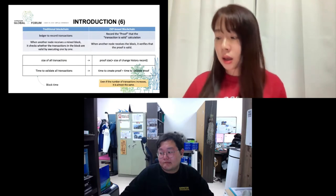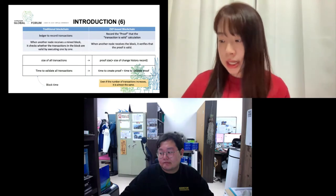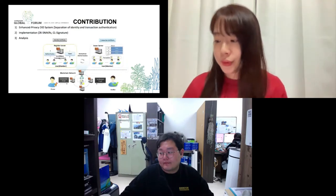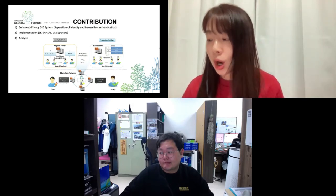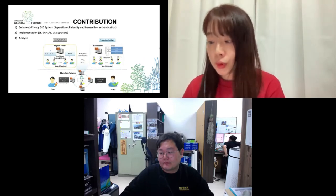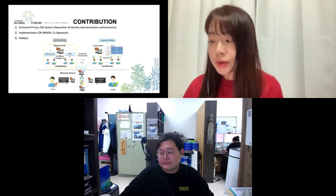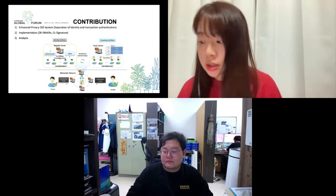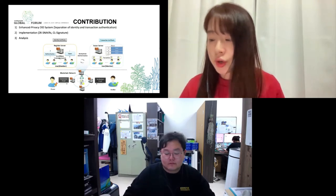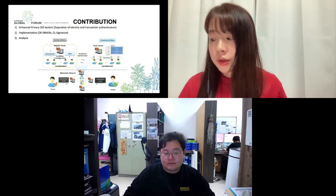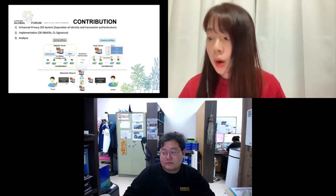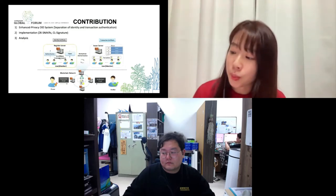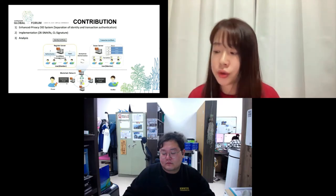Existing transaction records are converted to proof. The size is reduced and the verification time is reduced, too. Our contribution is as follows. First, we propose a DID system with enhanced privacy, like the Hyperledger INDY project, suppressing member identity verification and securing transaction certificate connections. Second, we implement representative zero-knowledge proofs: CL signature and ZK-SNARKs. Because the traditional INDY project considers only CL signature, our ZK-SNARKs application is a new challenge. Finally, we compare performance analysis performed in various simulations according to changes in the number of users and validators.